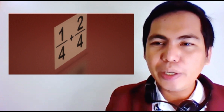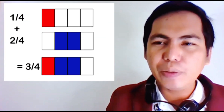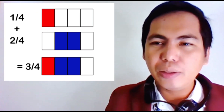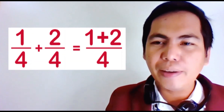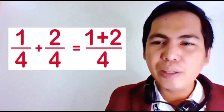Let's say we want to add one-fourth and two-fourths. I am going to present the illustrations of one-fourth and two-fourths. When we put together one-fourth and two-fourths, it will give us three-fourths. Based on the illustrations, when we are adding similar fractions — fractions having the same denominators — we simply add the numerators and then copy the common denominator.